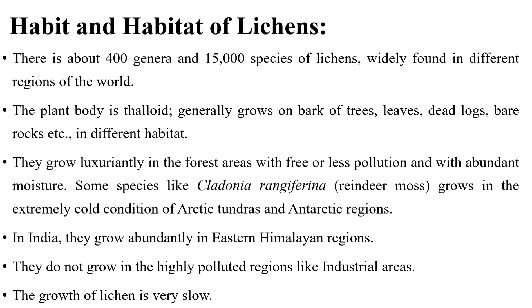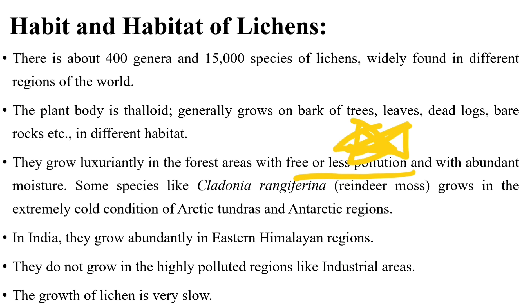Habitat: there are about 400 genera and 15,000 species of lichen, widely found in different regions of the world. Their plant bodies generally grow on the bark of trees, on leaves, on dead logs, and on bare rocks. They grow luxuriantly in forest areas with less pollution and abundant moisture — remember, they grow in less polluted areas.